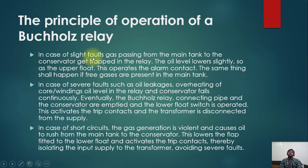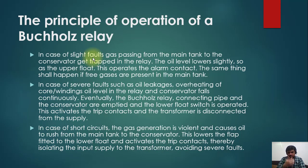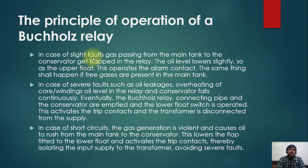Now let's discuss in detail with diagrams how the Buchholz relay operates. In case of a slight fault, gas passes from the main tank to the conservator and gets trapped in the relay, causing the oil level to drop slightly. This operates the upper float, which activates the alarm contact. This can also happen when free gases are present in the main tank — for example, when a transformer is newly installed and dehydration is being performed, trapped gas may take time to release and trigger the Buchholz.